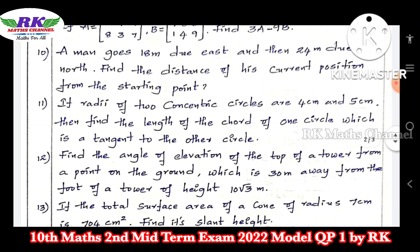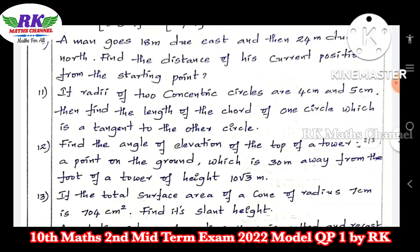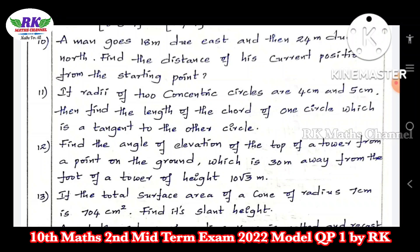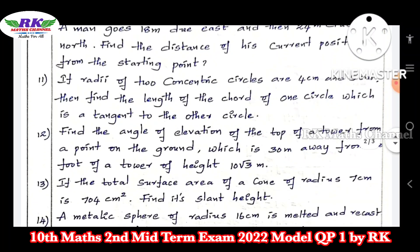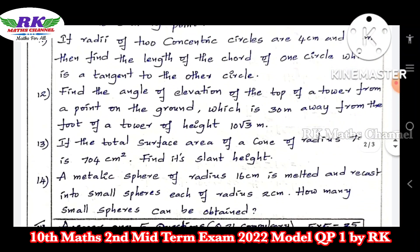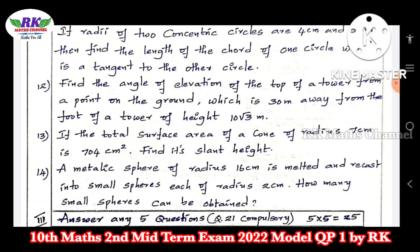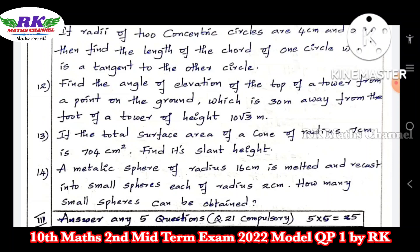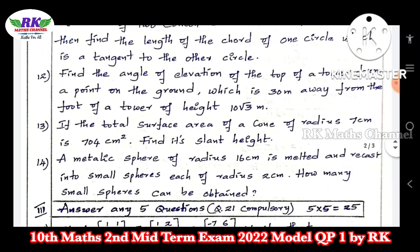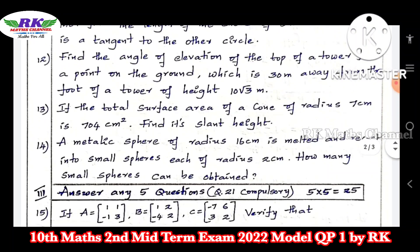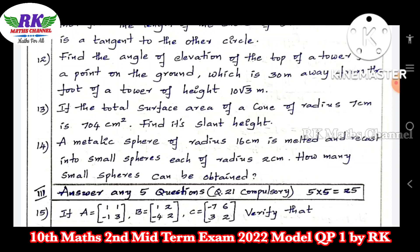Question number 11: find the radius of 2 concentric circles — this is a tangents concept. Question number 12: angle of elevation — trigonometry heights and distances topic. These are important questions. Question numbers 13 and 14 are mensuration.